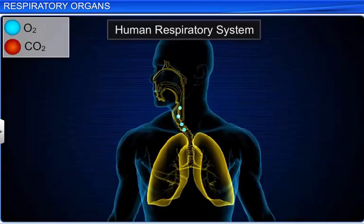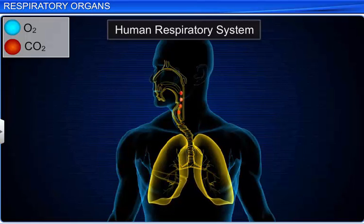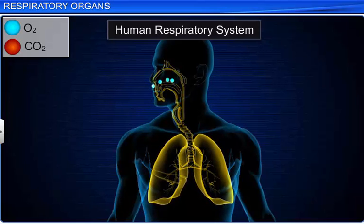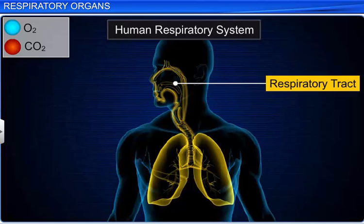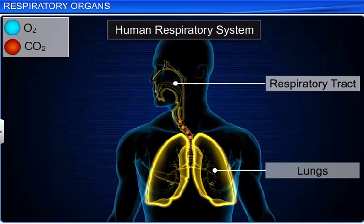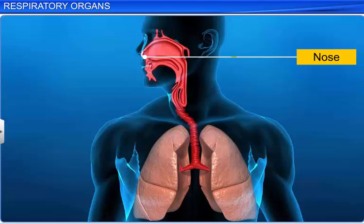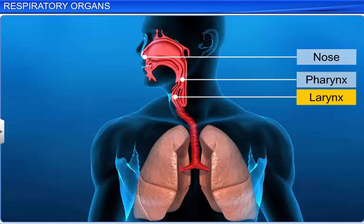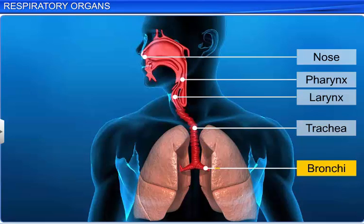Among all animals, mammals have the most well-developed respiratory system. In humans, it consists of respiratory organs such as the respiratory tract and lungs. The respiratory tract includes the nose, pharynx, larynx, trachea, and bronchi.